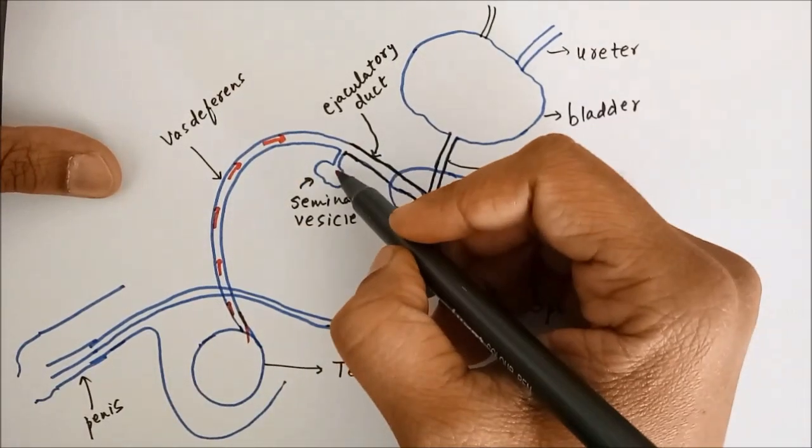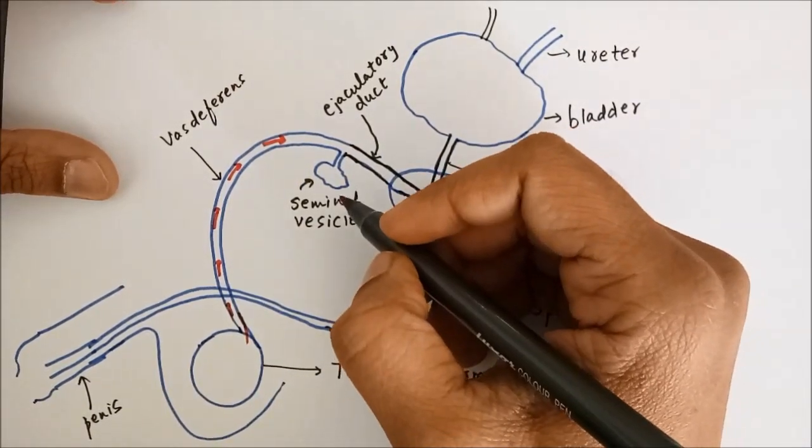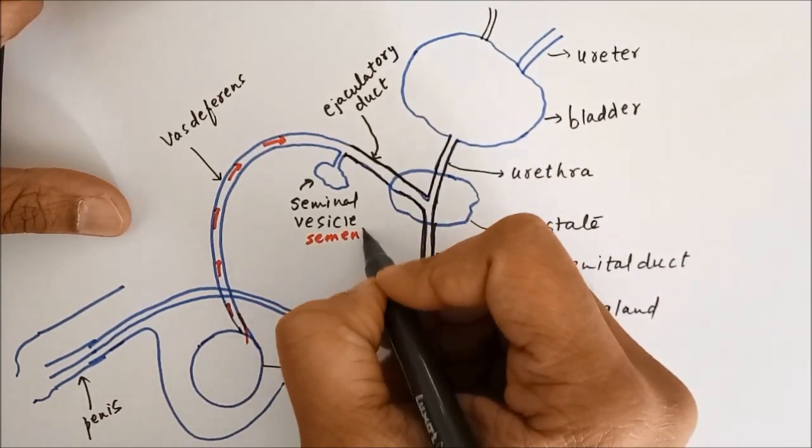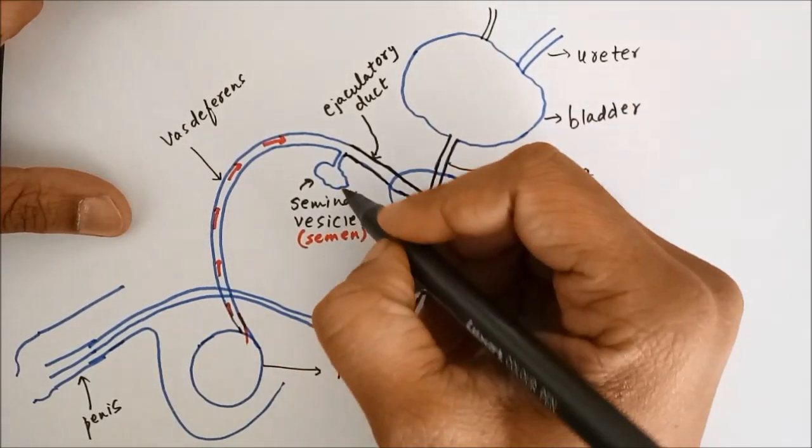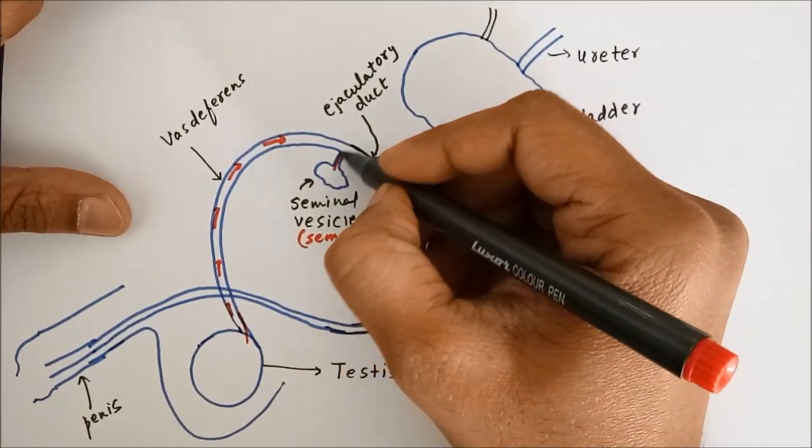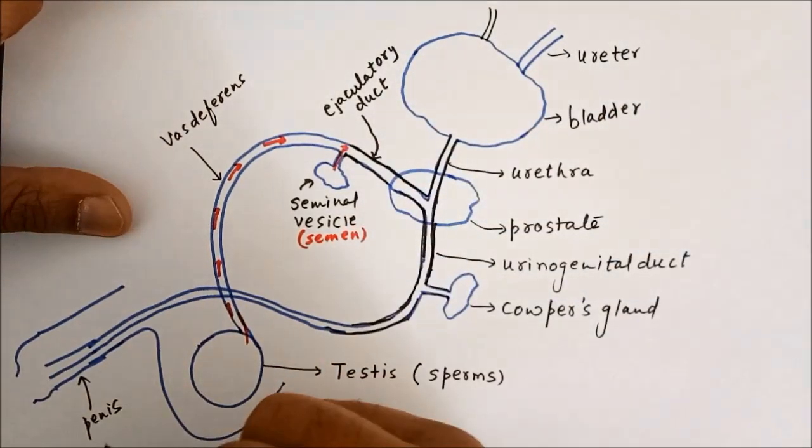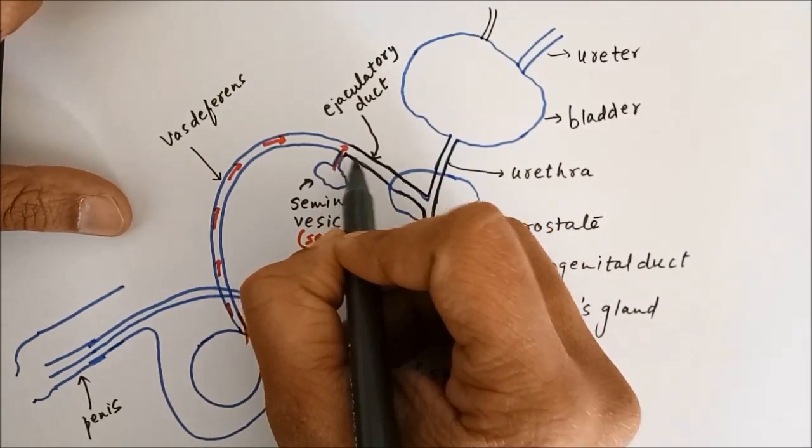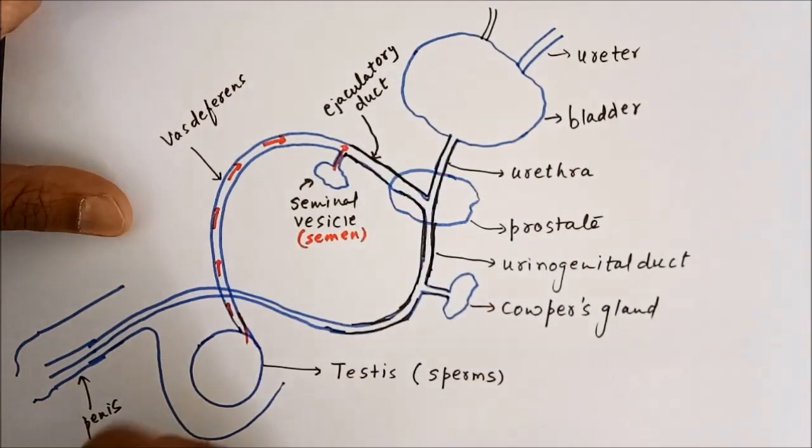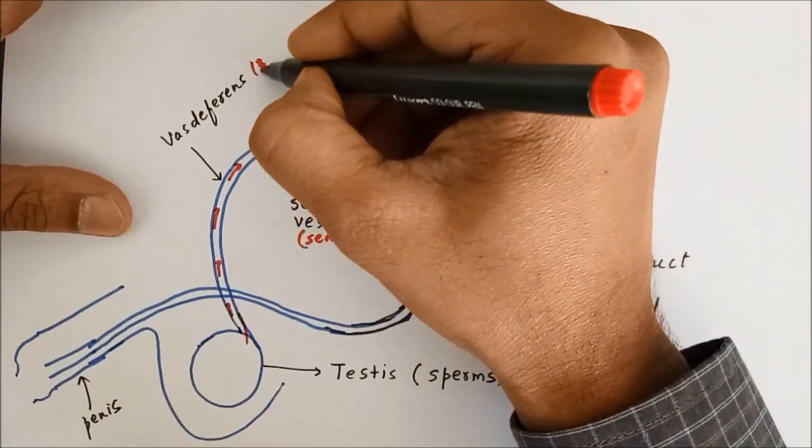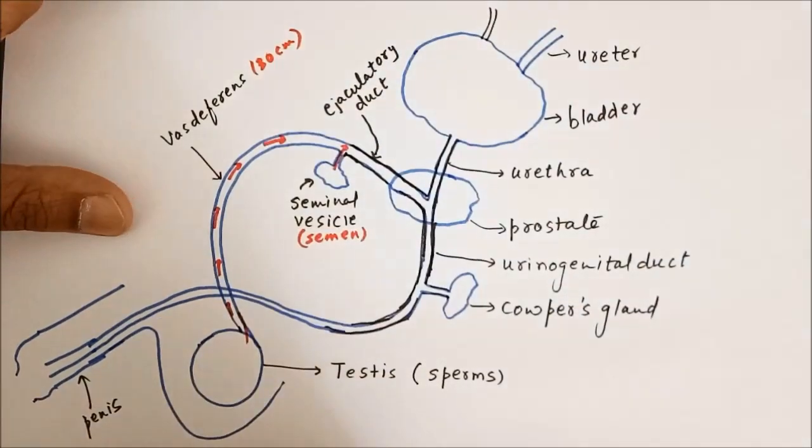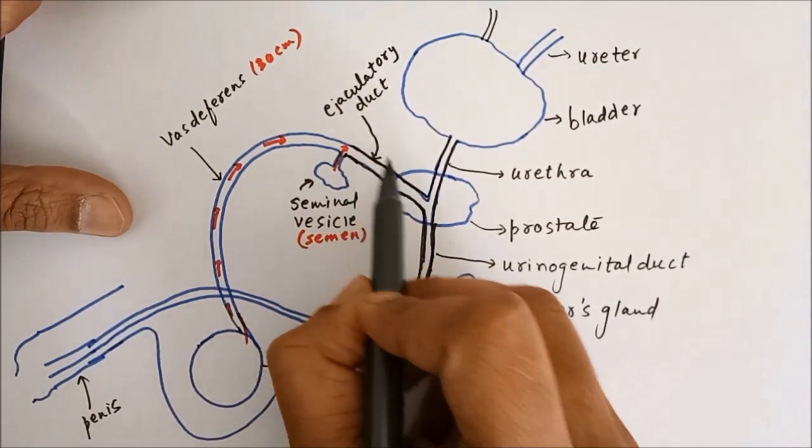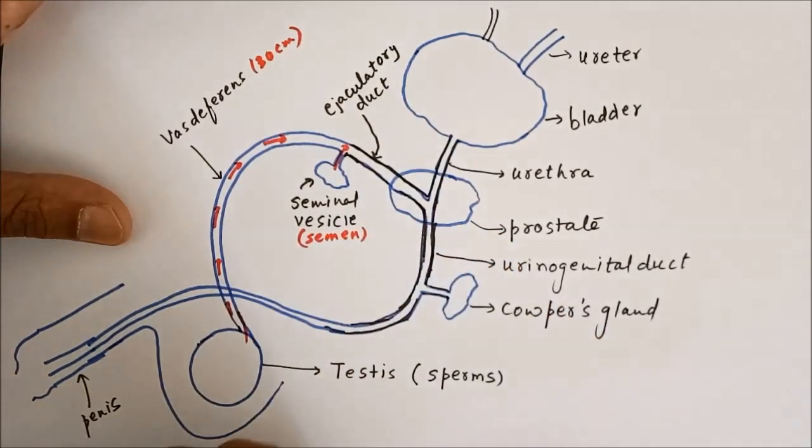Then this seminal vesicle produces a liquid called semen. This semen gets added up with the sperms, and then from here, this vas deferens becomes ejaculatory duct. Vas deferens is approximately thirty centimeters in length, and you can call this ejaculatory duct a part of vas deferens.